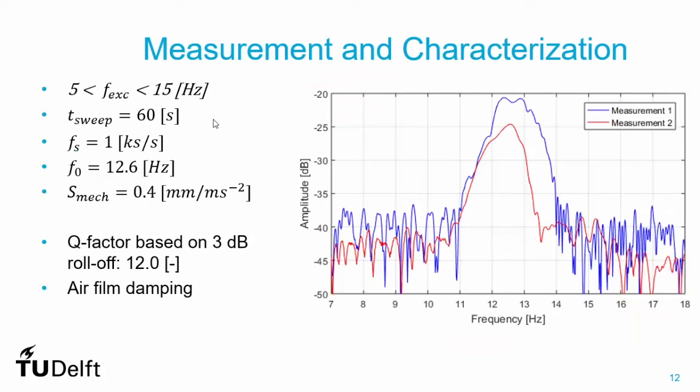A mechanical excitation sweep from 5 Hz to 15 Hz over 60 seconds was applied, with photodiode sampling at approximately 1 kilo-sample per second. Two measurements on two different dice showed a resonant frequency of around 12.6 hertz, which translates to a mechanical sensitivity of 0.4 mm per (m/s²) in SI units. The quality factor based on 3 dB roll-off is around 12, which can be explained by air film damping, as packaging has not yet been optimized.